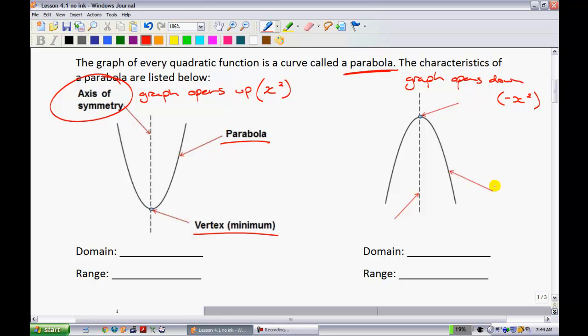On the other side, we have the same thing. We can label this as the parabola. This would be my vertex up here. Only this time, it's not a minimum. It would have to be a maximum. And then my axis of symmetry is cutting it in half.